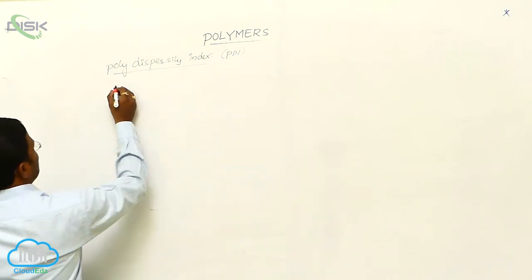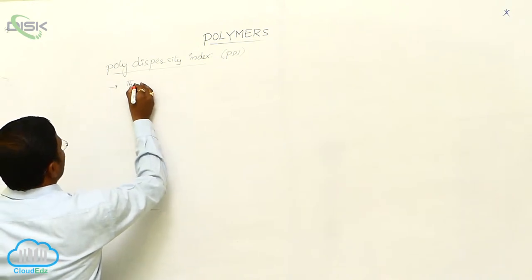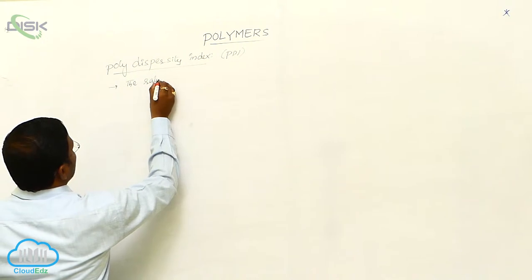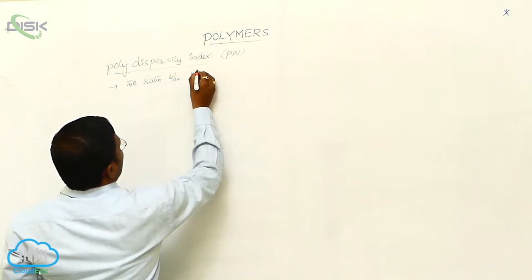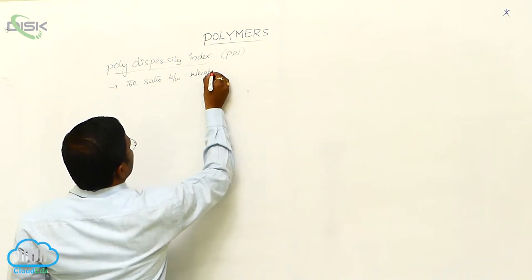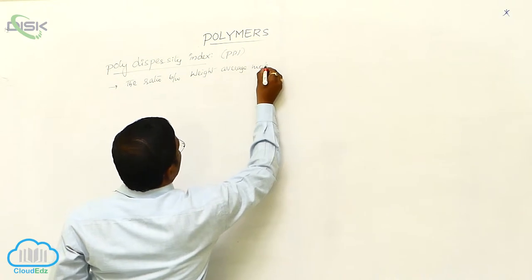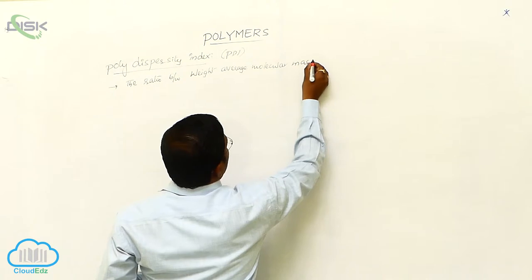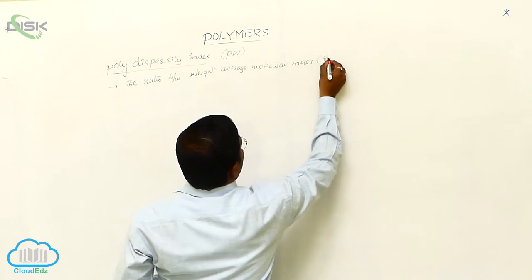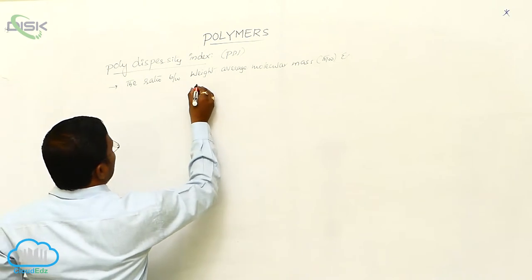What is polydispersity index? It is the most important one, the ratio between weight average molecular mass, M bar W, and number average.